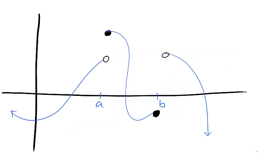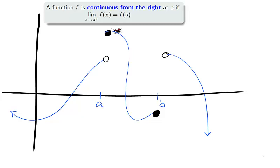An intermediate step towards continuity is one-sided continuity. The function is continuous from the right at the point x equals a, since righto crawls to the point on the graph (a, f(a)).